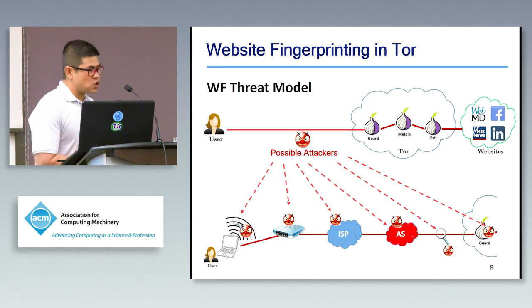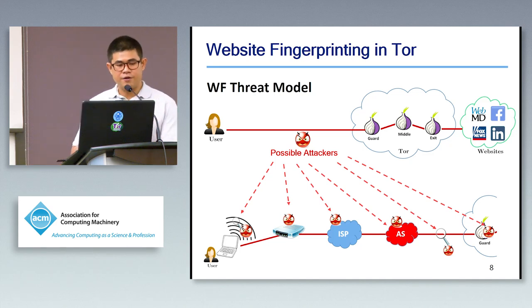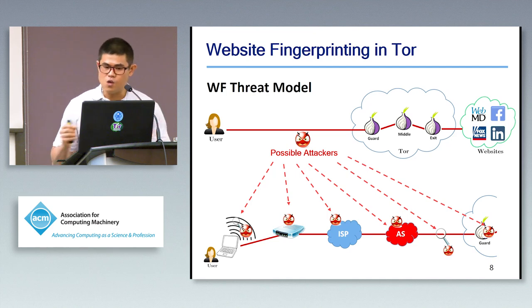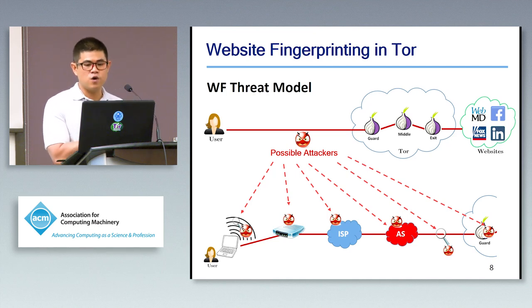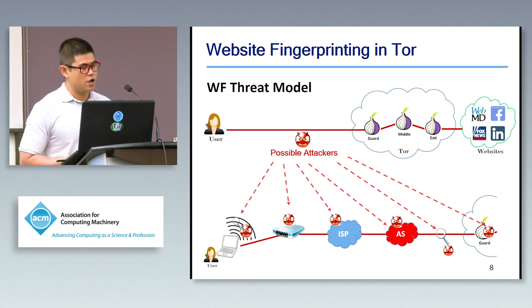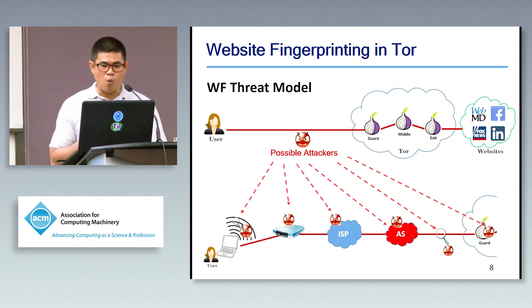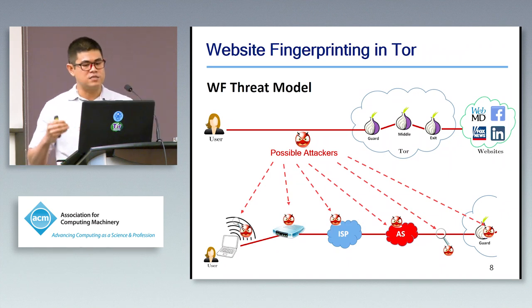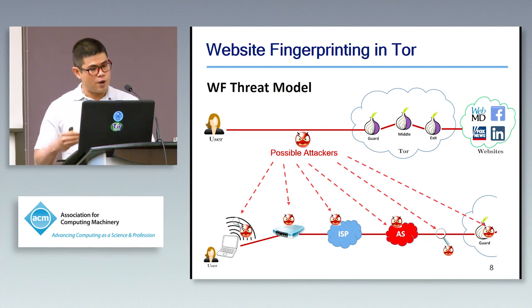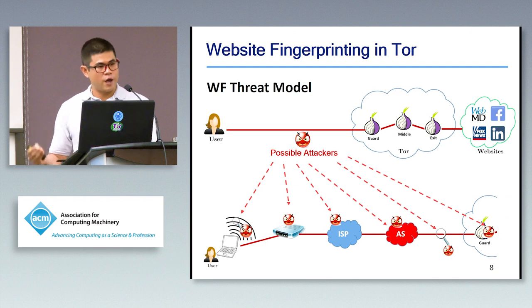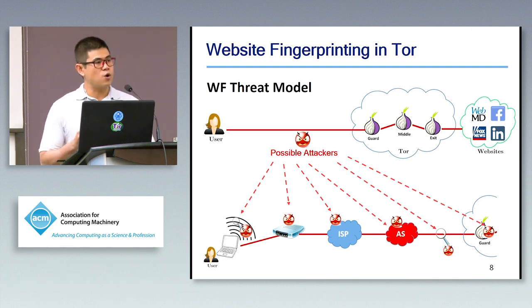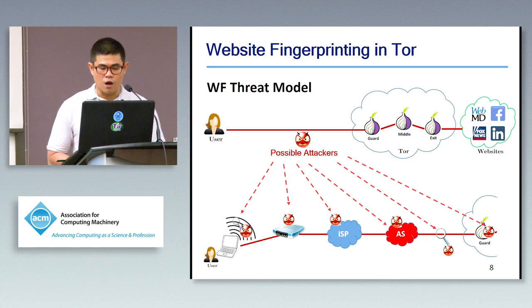We also assume that the website fingerprinting attacker is a local passive adversary — someone who can access the network communication between the user and the guard node. For example, this could be someone who intercepts the user's wireless connection, gains access to the user's modem, an internet service provider, an autonomous system, a local eavesdropper, or even the guard node itself.